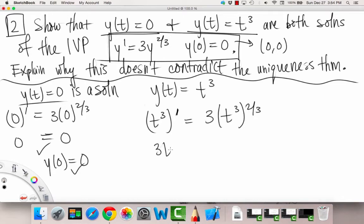On the left side, we get 3t² by deriving. And on the right side, we also get 3t², this time by canceling some exponents, right? So we have that.